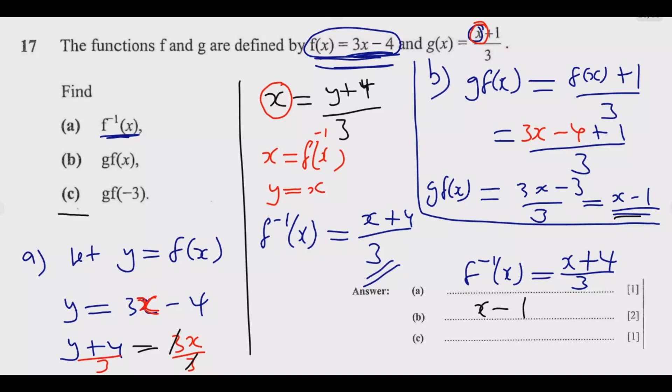Then once you do that, you get those two marks. Then we go to (c). Now in this function that we found in part (b), whenever there is x we are going to put negative 3. That's as simple as that.